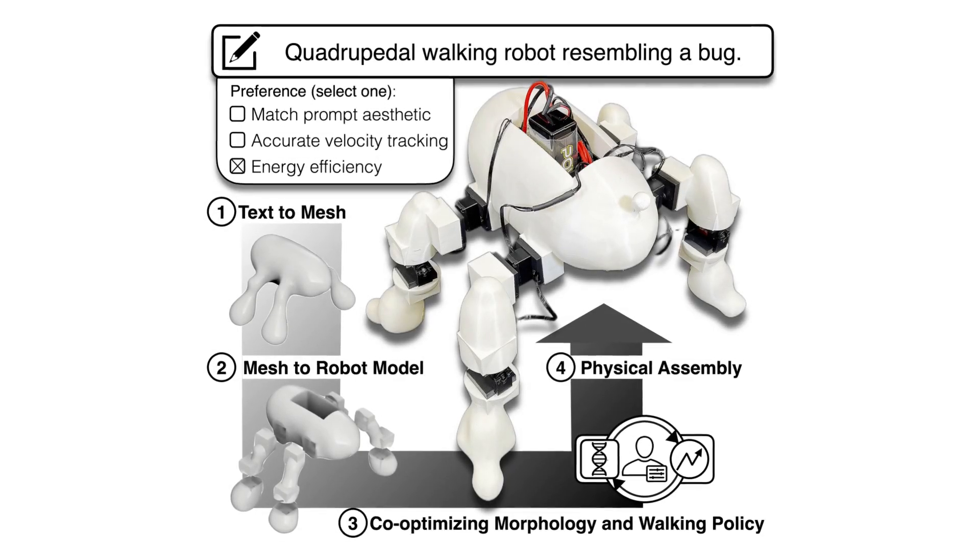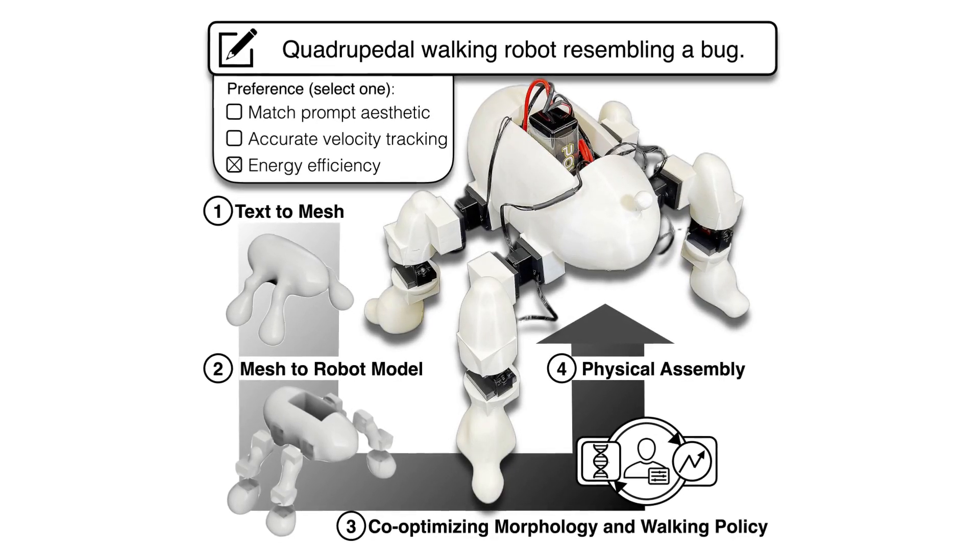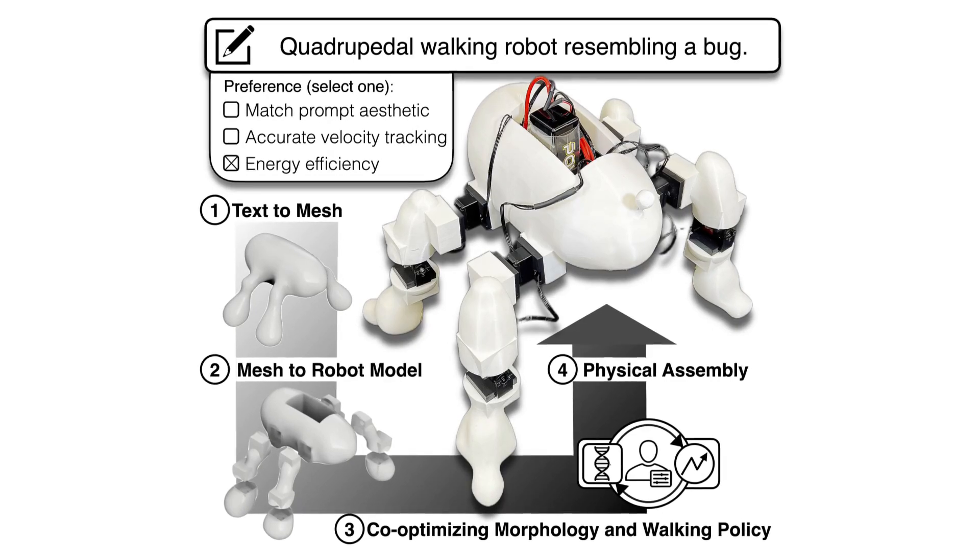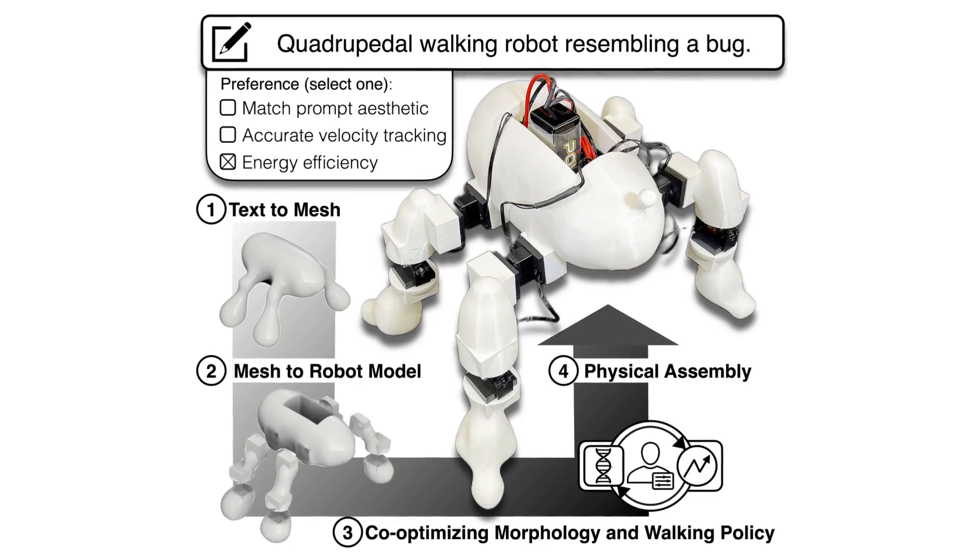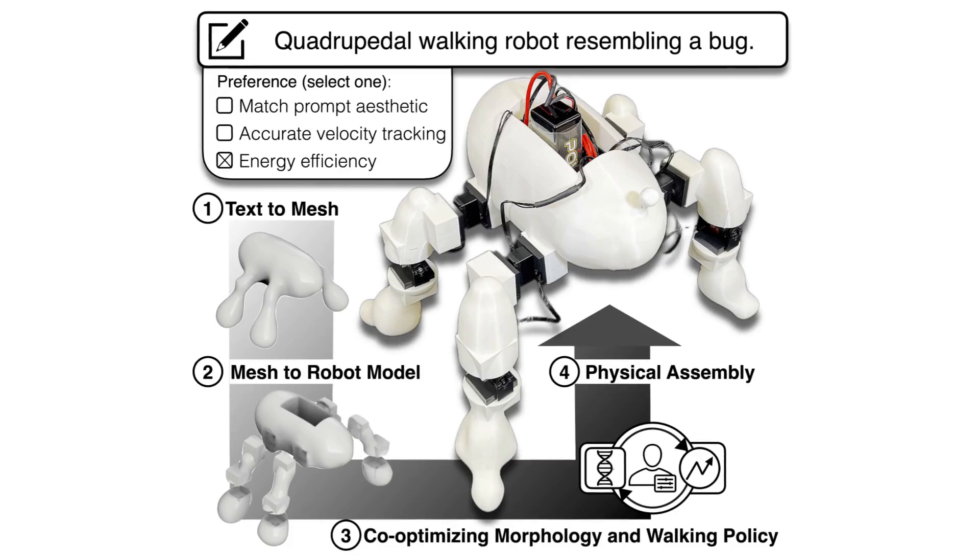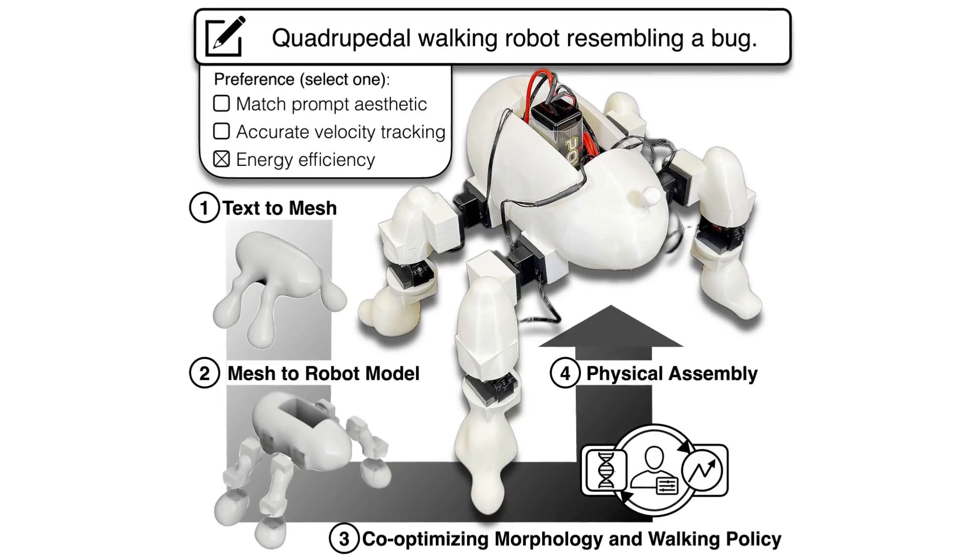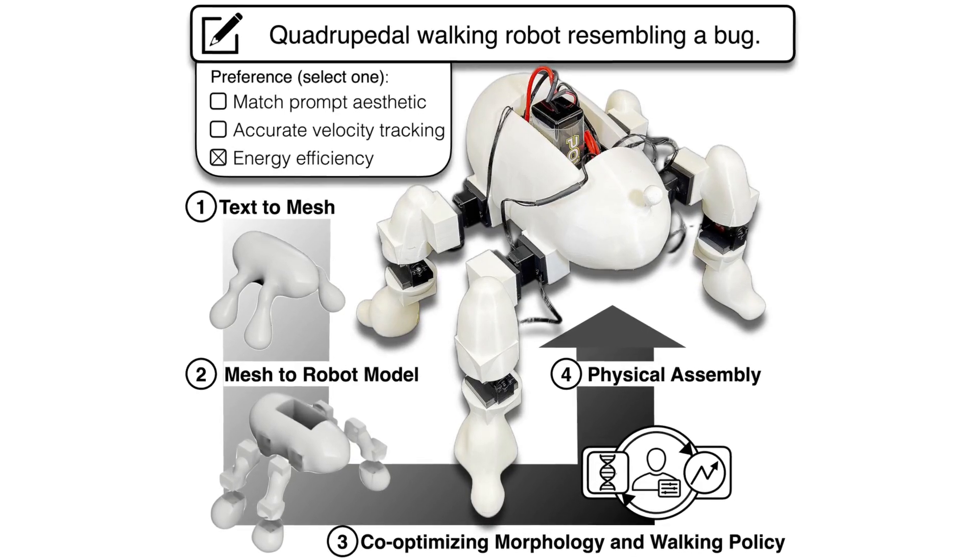Previous methods focus solely on performance metrics, such as optimizing for speed, and do not account for the final appearance of the robots. In contrast, our use of text-to-3D models enables us to specify a robot's visual aesthetic.